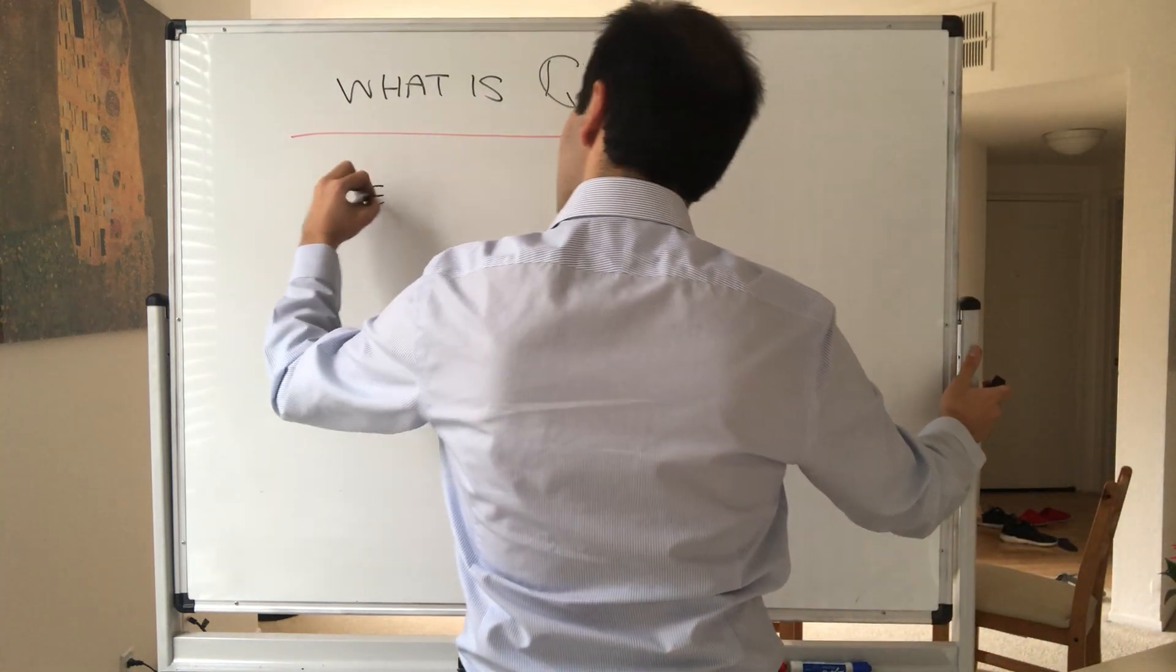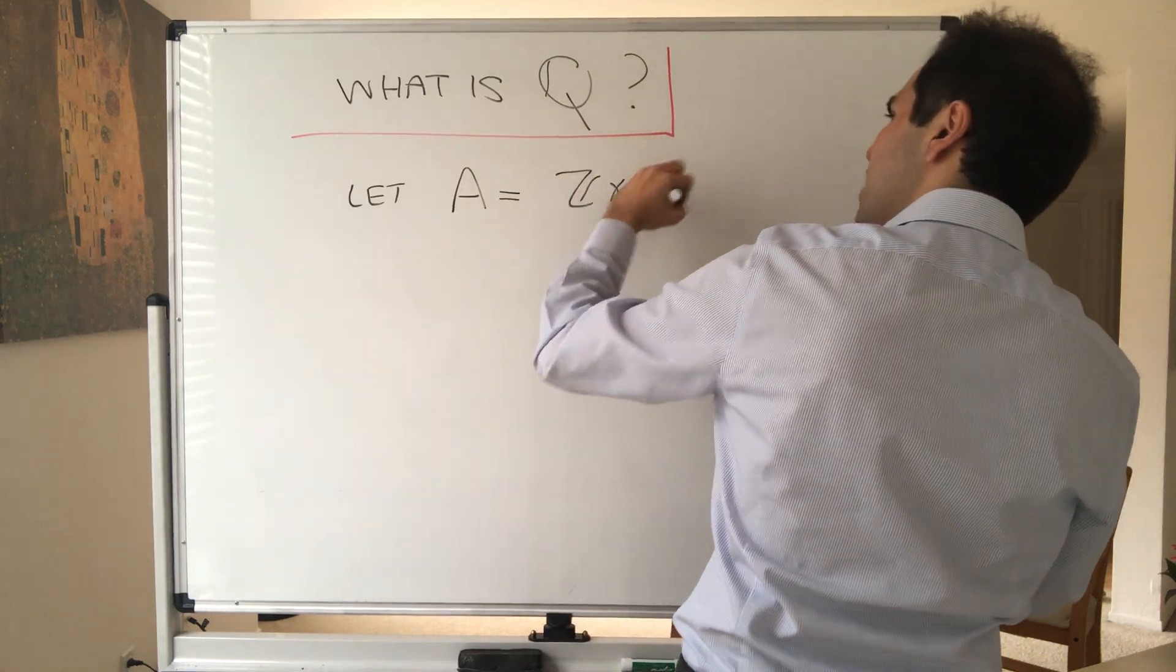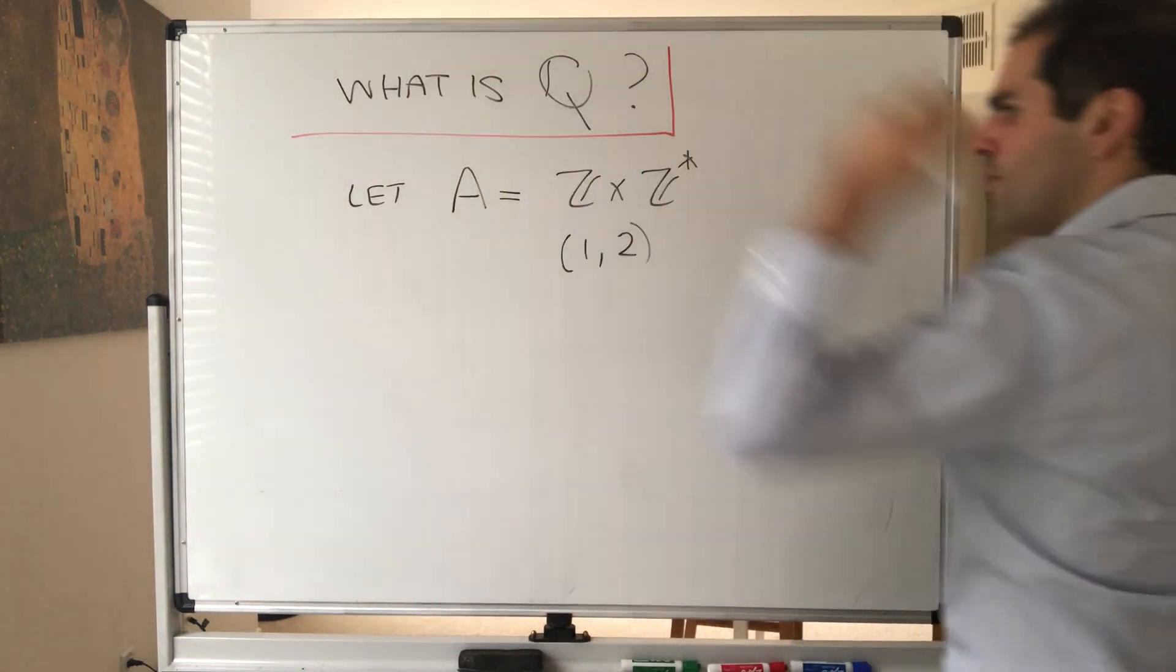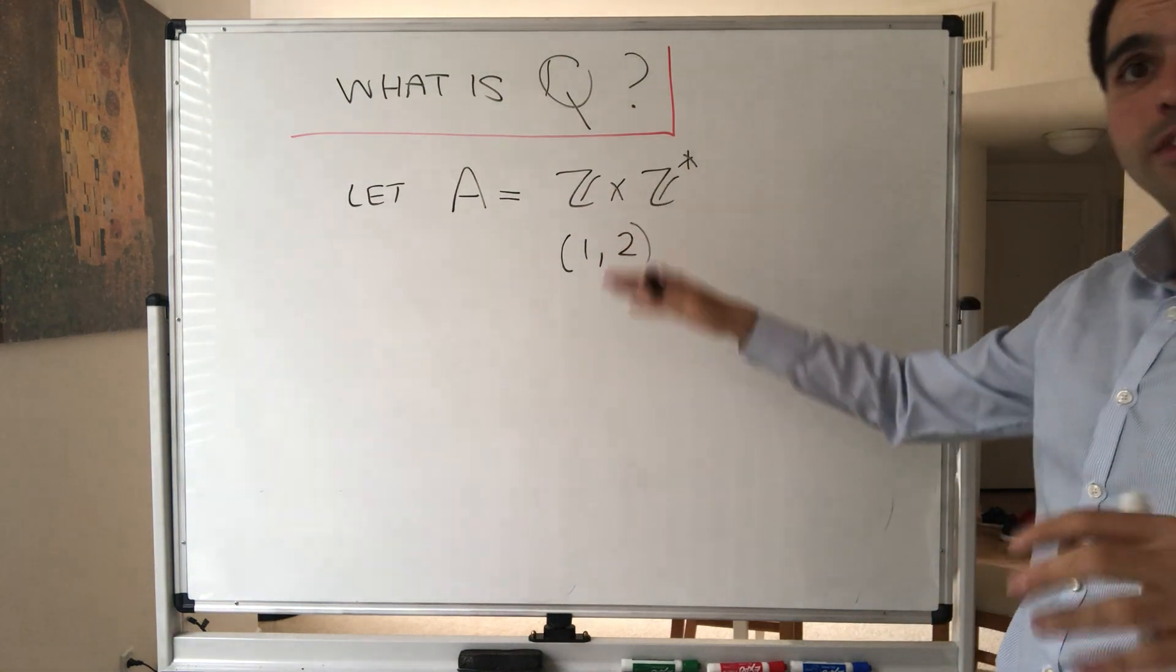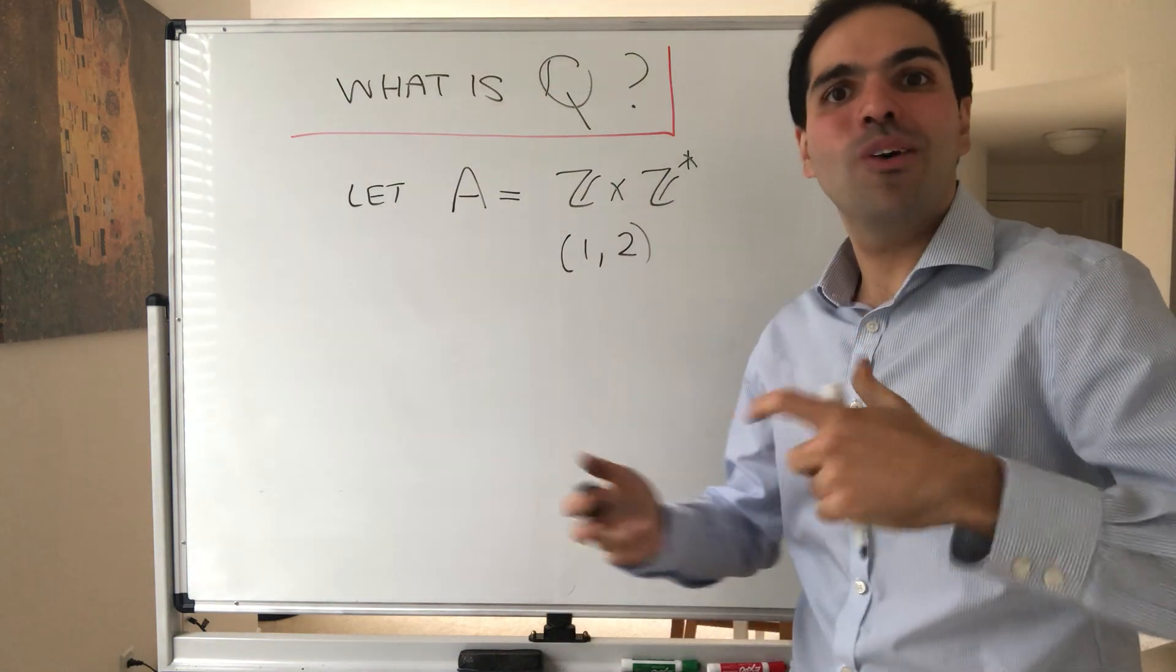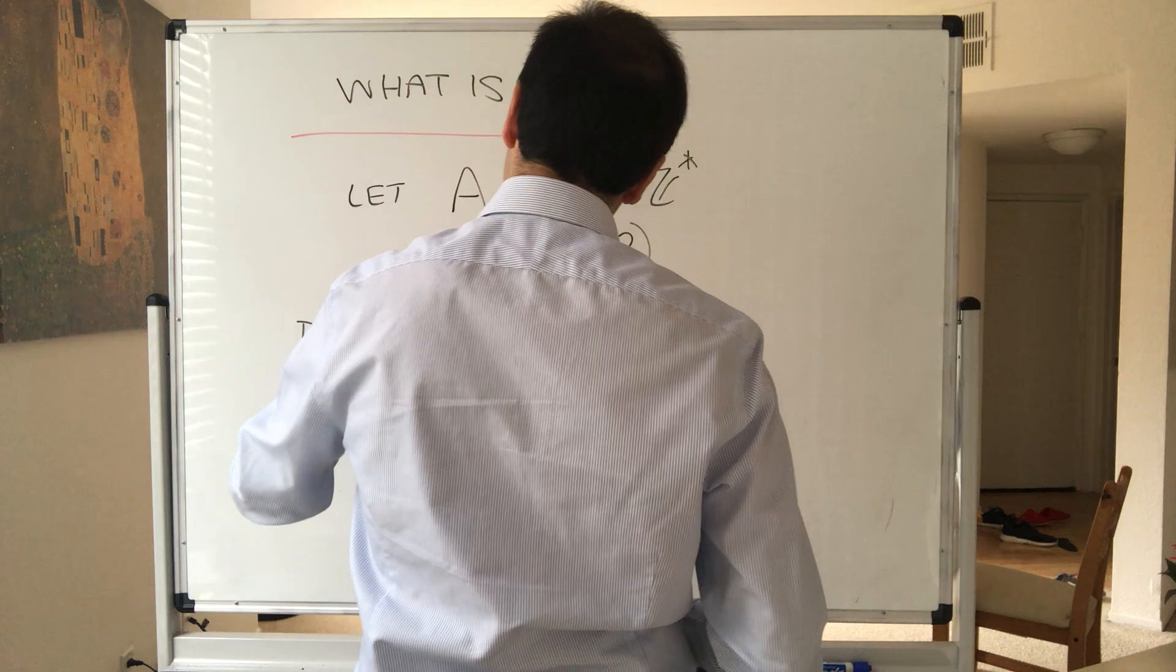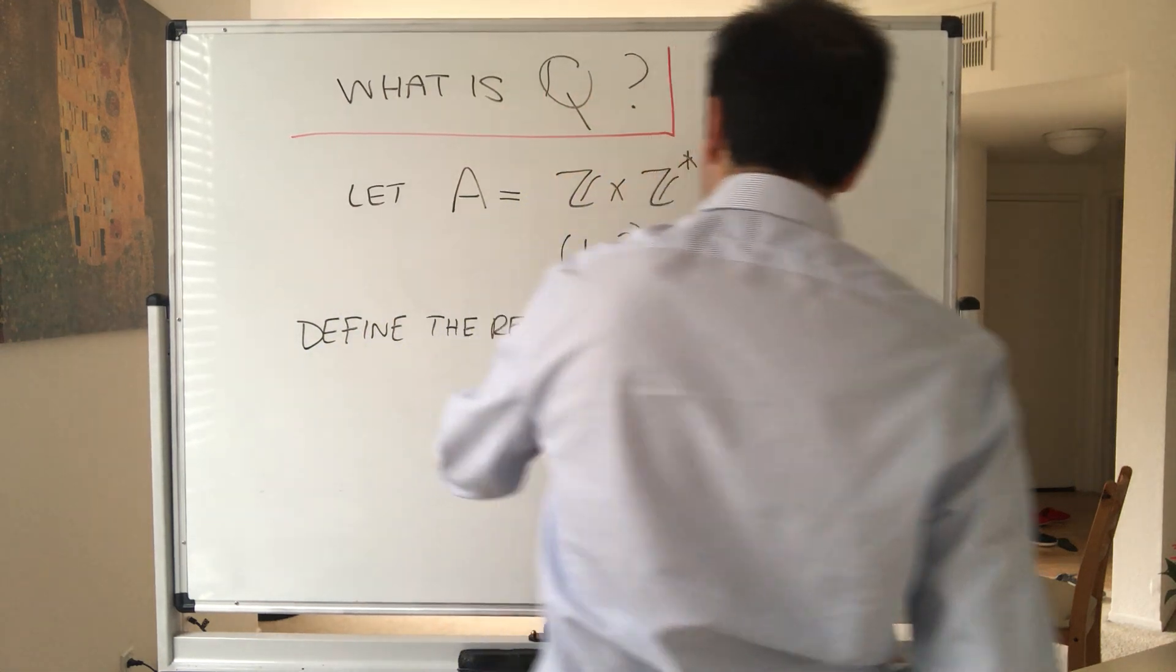So let A be the set of integers, or almost times integers, except remember that we cannot divide by 0. So think, for instance, (1, 2), right. And then what we would like to do is say two fractions are equal, except not quite equal as a number but equal as an equivalence relation. So define the relation squiggle on A.